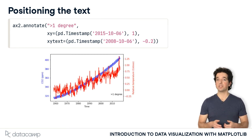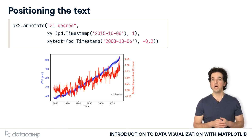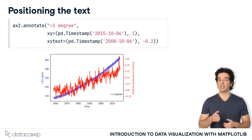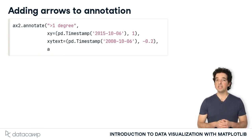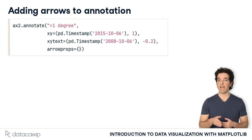The problem now is that there is no way to see which data point is the one that is being annotated. Let's add an arrow that connects the text to the data. To connect between the annotation text and the annotated data, we can add an arrow.